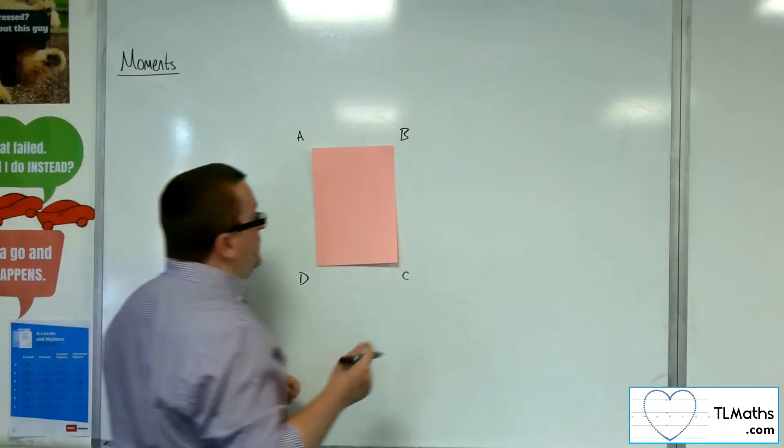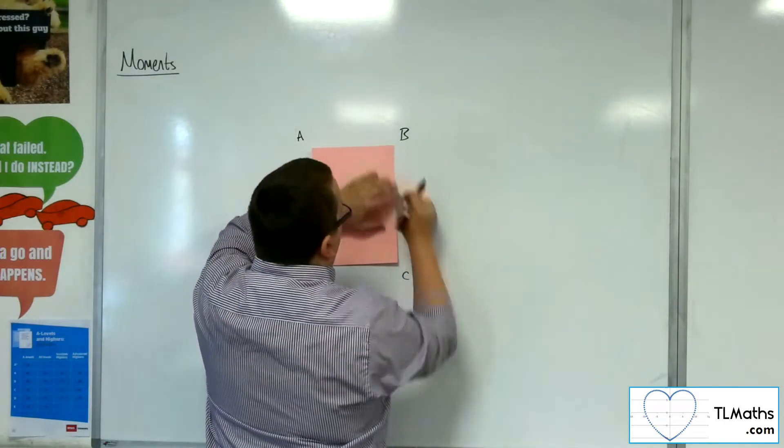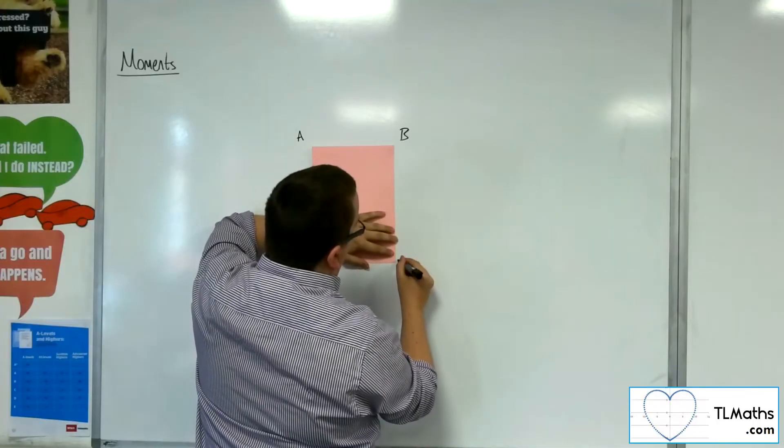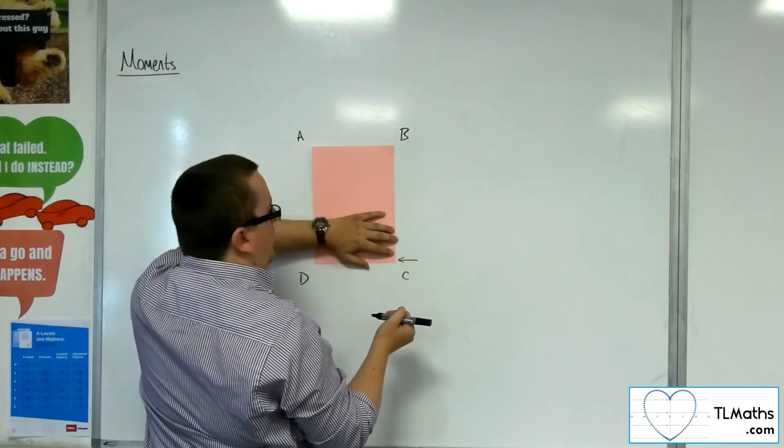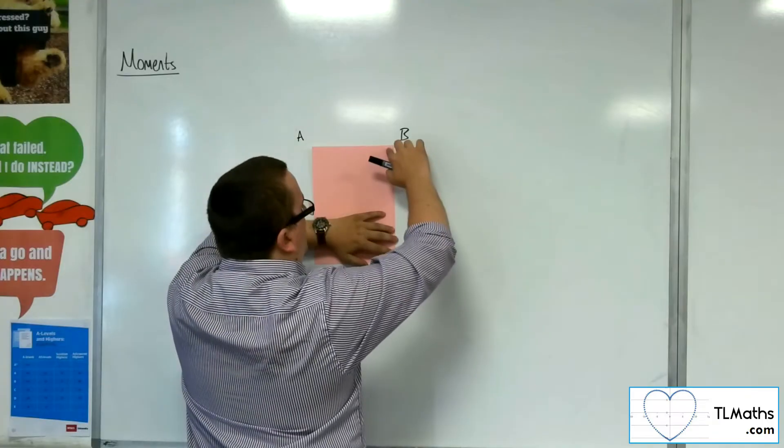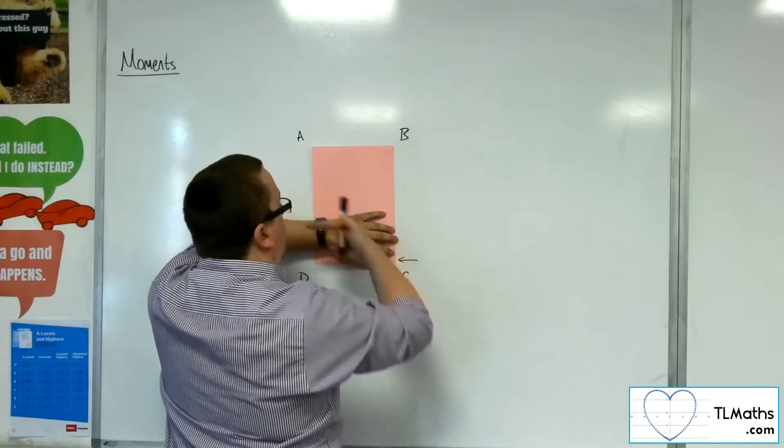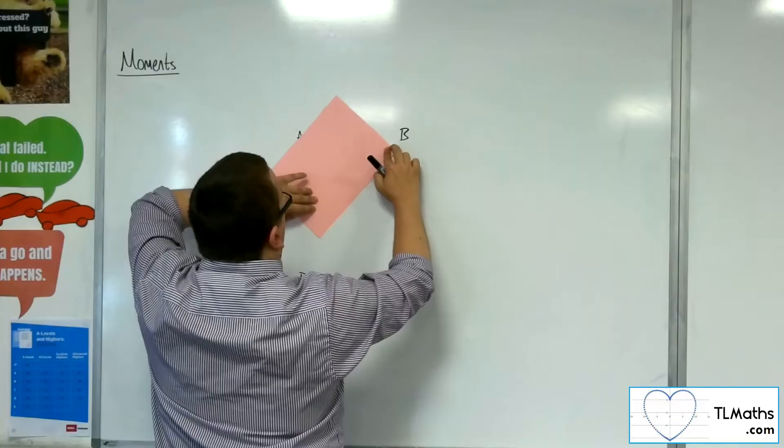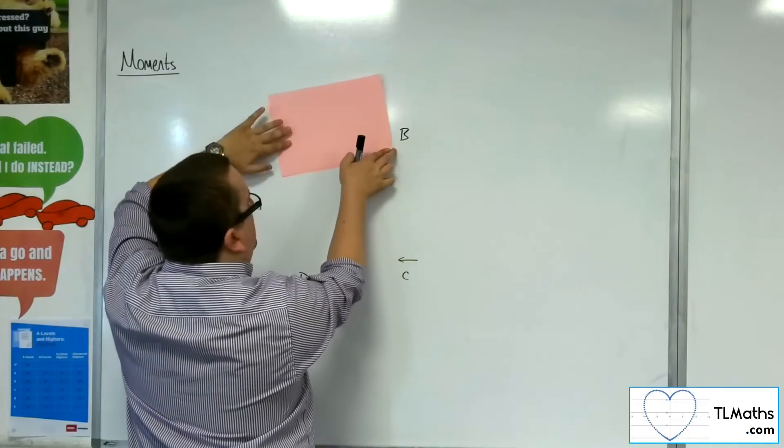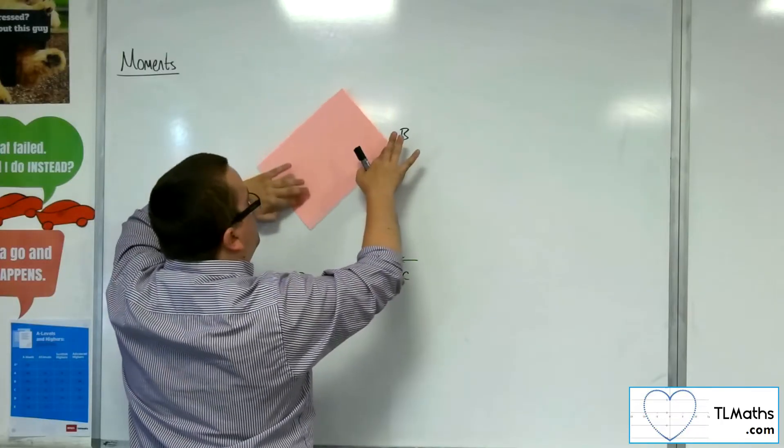Because I fixed it at B, if I applied my force this way, then what would happen? Well, this force would push it round that way.